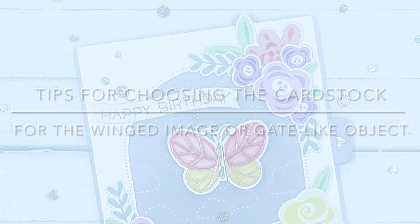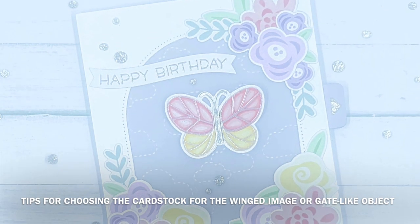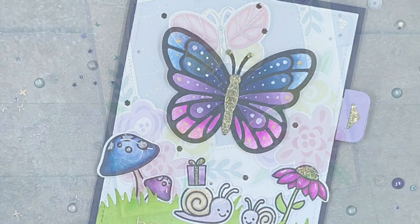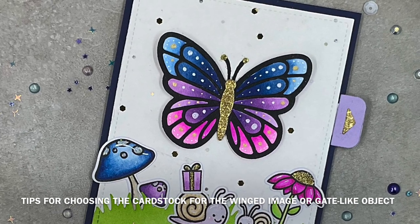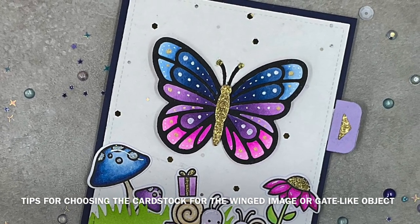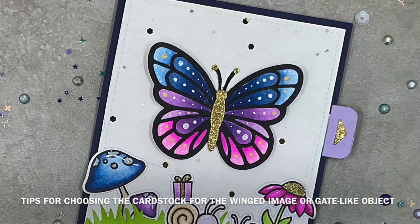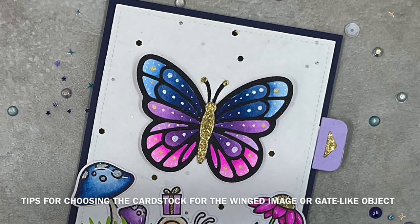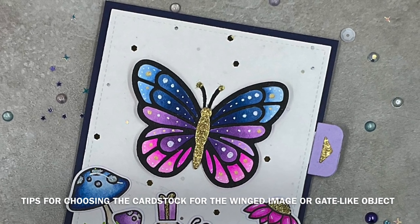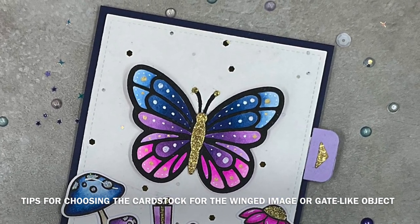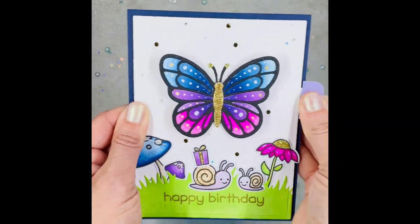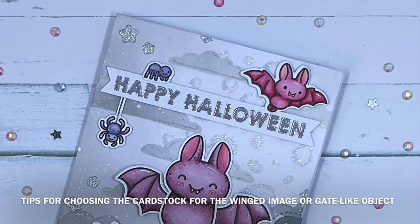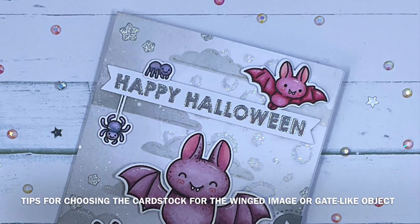Before we start with the card making, I wanted to mention that I found it to be very important what kind of cardstock you use for your winged object. For my first card, the one with the butterflies, I used very heavyweight cardstock without bending the wings. So they kept lying nice and flat on the card base. But that made it very difficult to lift the wings. So I had to use very heavyweight, strong acetate, which means that pulling the tab really became an act of strength.